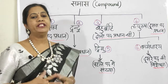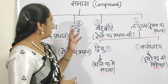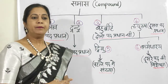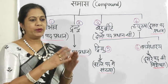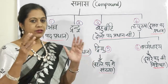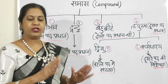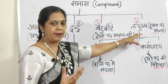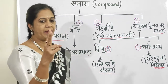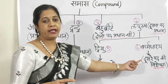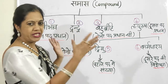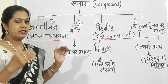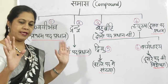Now let's talk about the types of Samas. How many types are there? Generally we say four, but when we elaborate we say six. Children also study six in their books. Actually it is four, and the subdivision of the fourth one is two — for example, Tathpurush has two sub-types: Dvigu and Karmadhare. These two are subdivisions of Tathpurush. So we generally mention six types. Let us go with six, as 10th standard students follow it.